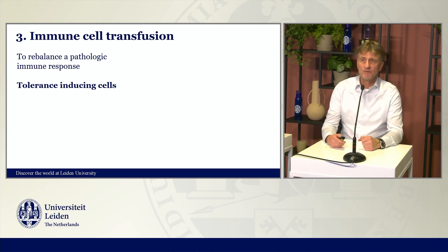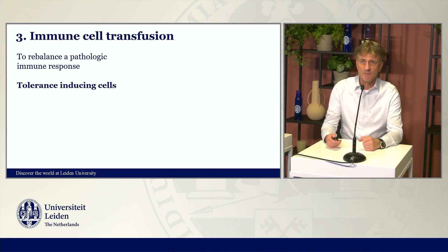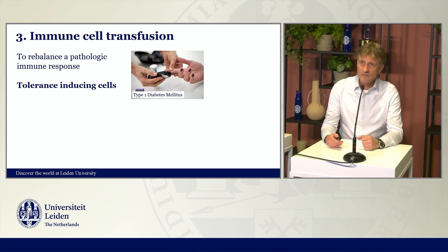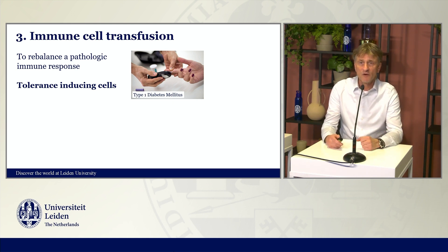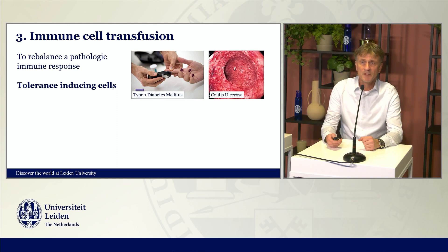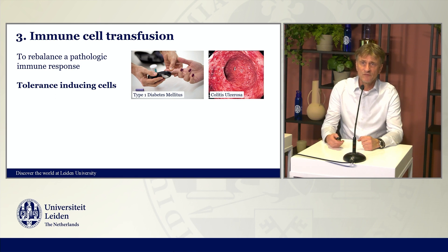The last field, which is very rapidly developing, is transfusion of immune cells. A first example is the tolerance-inducing immune cell. At present, these are used in our center to cure type 1 diabetes mellitus, which is an autoimmune disease where the body is not tolerant against the islets of Langerhans in the pancreas, and tolerance needs to be re-established. Also in colitis ulcerosa, an immune disease of the gut, tolerance-inducing cells have great potential to cure such autoimmune diseases.